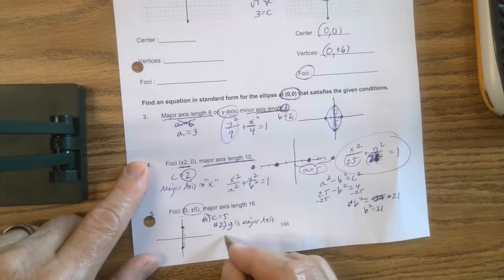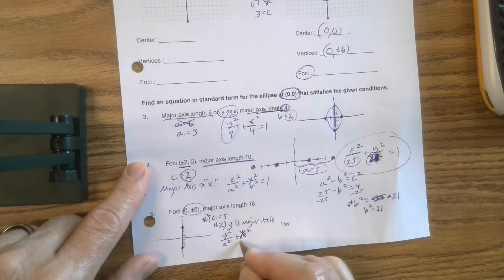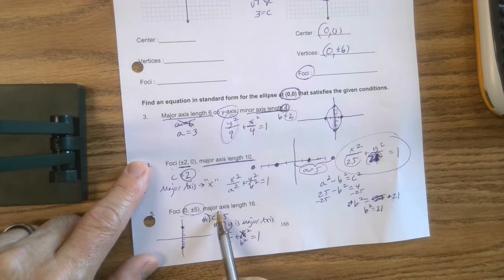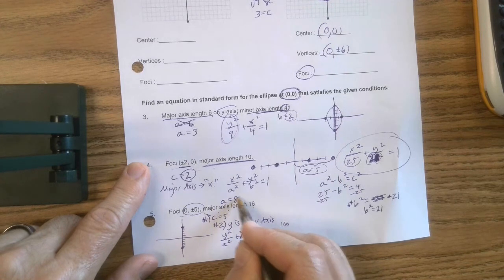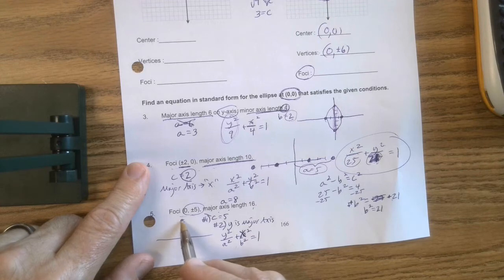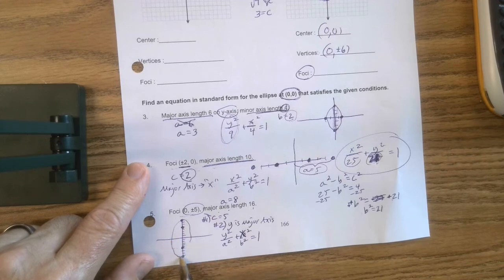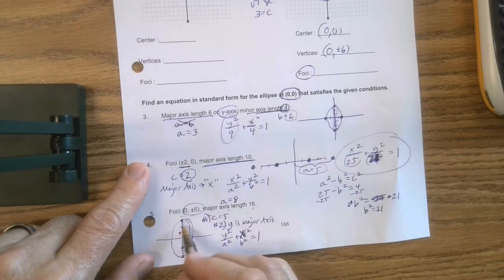It tells me it's going to be y squared over a squared plus, excuse me, x squared over b squared equals 1. So look at this. My major axis length is 16. That's just a way of telling you that a is half of that. So I know that if this is 5, I'd go 6, 7, 8. 6, 7, 8. And my ellipse would look something like this. So I kind of have an idea of what's going on. So I know that c is 5. And I know that a is 8.